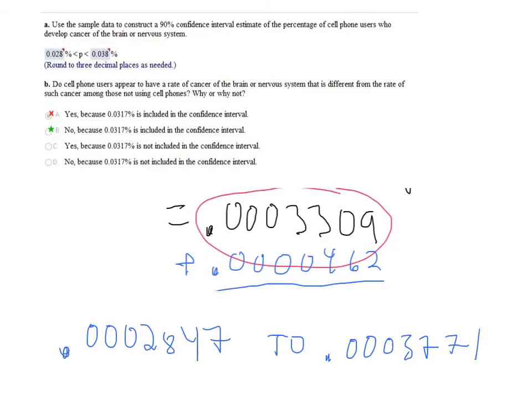So I added and subtracted that margin of error from the p-hat, from the sample proportion, and this is what I got for results. And then I'm noticing in the question that they're asking for percentages, and these aren't percentages. So I'm going to multiply by 100 to make these percentages. And then they're asking me to round to three decimal places, so the 4 is not bigger than 5. So that's what's going to go to the left.